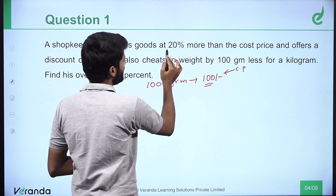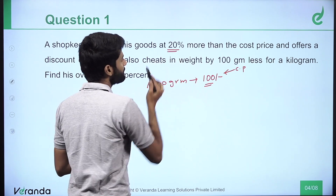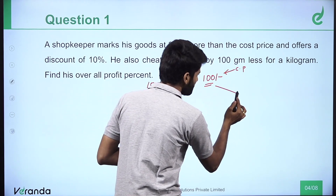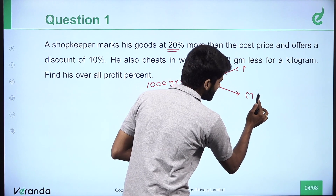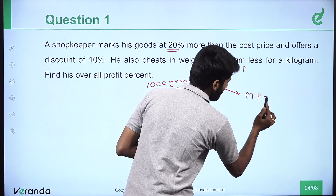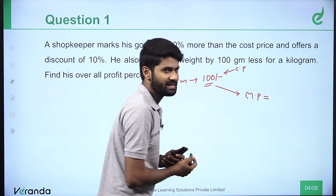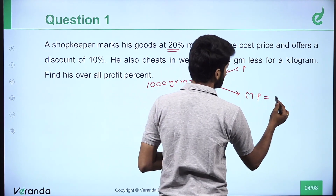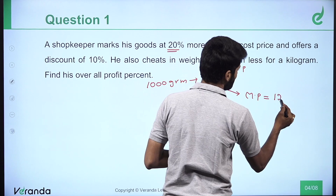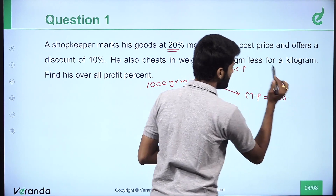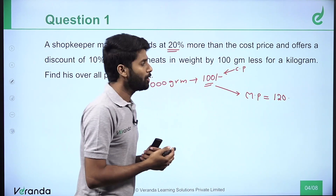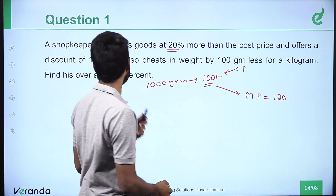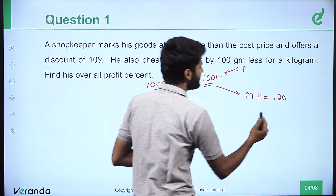First, he increases the price by 20%, giving the market price. And then, once you apply the discount, selling price is calculated from the market price.